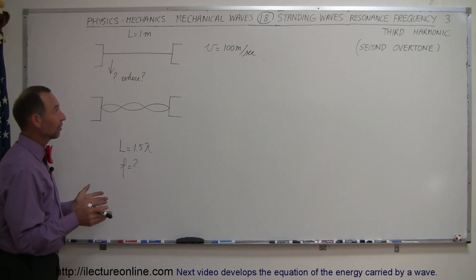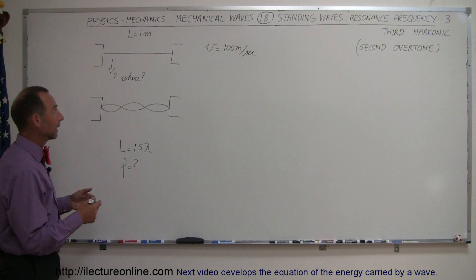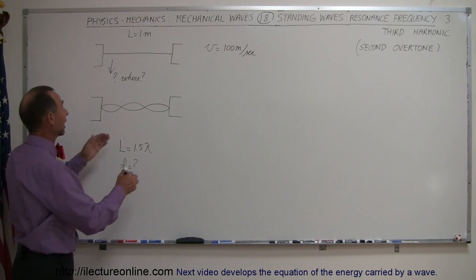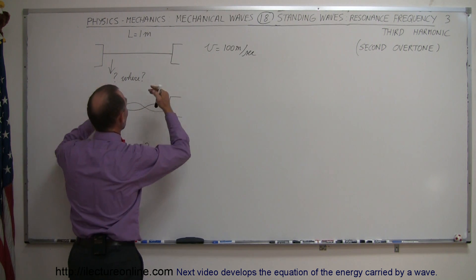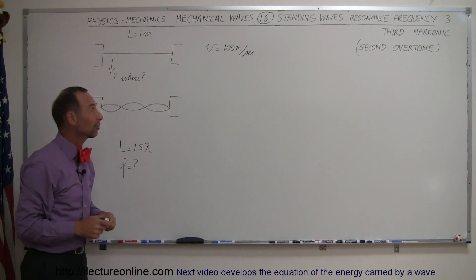And now in this video, we're going to take a look and see how we can accomplish a third harmonic on a string. Again, nothing has changed from before. We still have a string that's one meter long, same mass per unit length, same tension, so we get the same velocity of 100 meters per second.